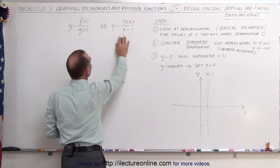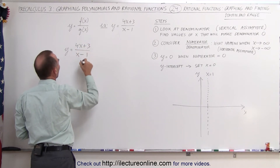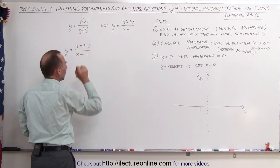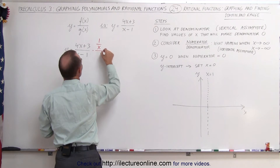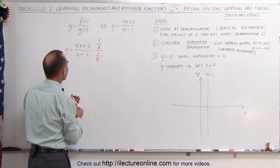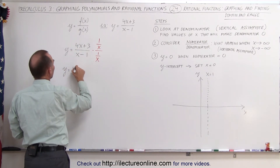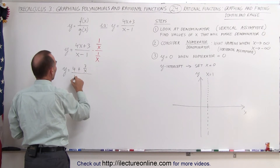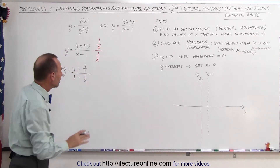We can do the following trick with our example: y equals 4x plus 3 divided by x minus 1. We look for the x with the highest exponent — in this case x to the first power in both numerator and denominator. We multiply both numerator and denominator by 1 over x. Since this equals 1, we haven't changed the function. This gives us y equals (4 plus 3/x) divided by (1 minus 1/x).